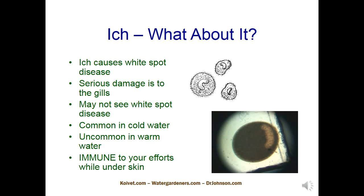Knowing this, warming the water — I like 78 degrees — helps. I'm clearing ich these days with salt. It works fine. If you're worried about dosing or having chemicals around, you can use salt. And Mardel Clout — I recently used Clout in a 360-gallon tank that I didn't want to salt. One problem with salt is you've got to get rid of that water once the salt treatment is done. Salt is hard on live plants. In 360 gallons, you're using something on the order of 10 to 12 pounds of salt.